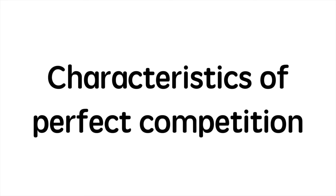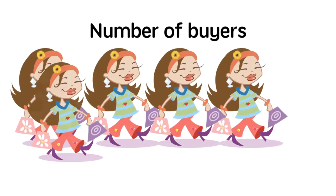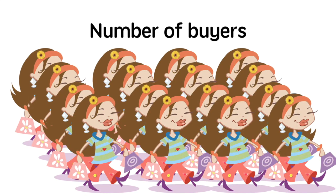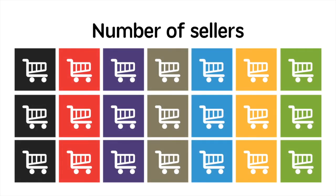It's important to remember that perfect competition is a theoretical model and it is very difficult to find a pure example of it in the real world. In perfect competition there are a large number of buyers, which means that no single buyer has an influence over market price. Also on the seller's side, there are many sellers — so many that no individual seller has any control over price.